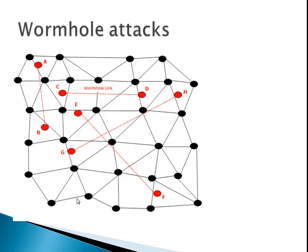These wormhole nodes cut across nodes that are sending data and packets from one point to the other. So potentially, wormhole attacks can congest the network or even lead to denial of service attacks, or they can obtain privileged information that they were not entitled to get.